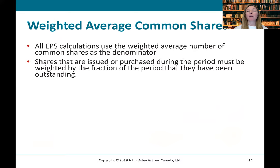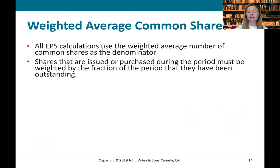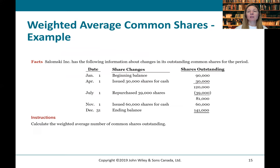Now let's talk about the denominator — the weighted average number of common shares. All EPS calculations use the weighted average number of common shares as the denominator. Shares that are issued or purchased during the period must be weighted by the fraction of the period that they have been outstanding. Let's take a look at an example.